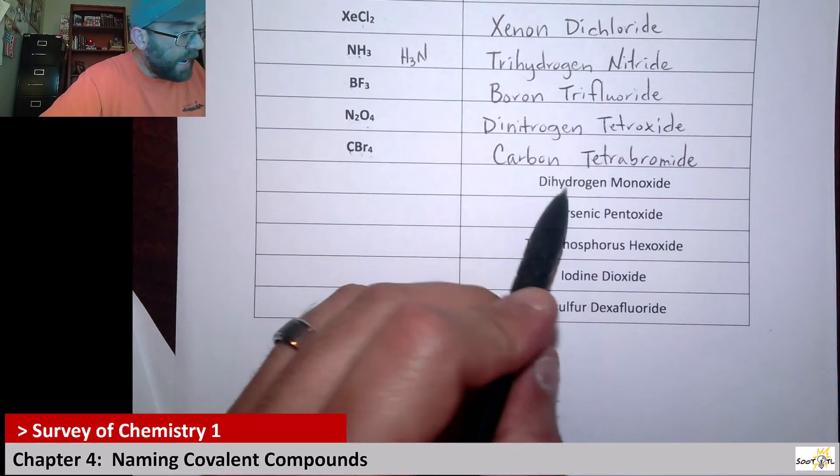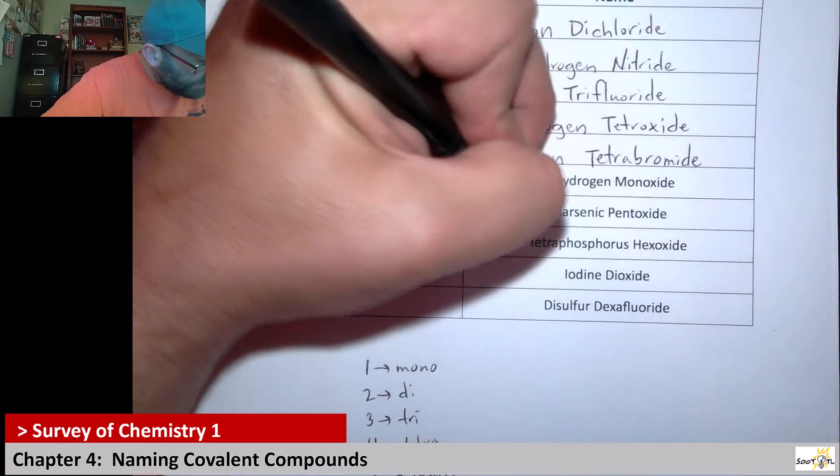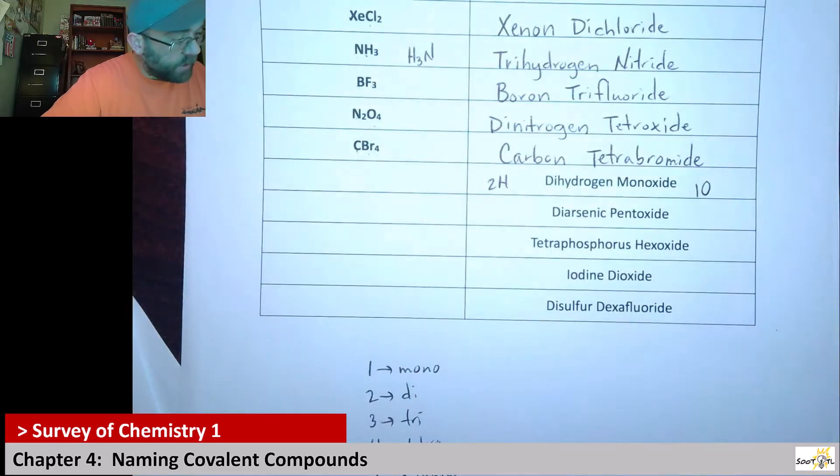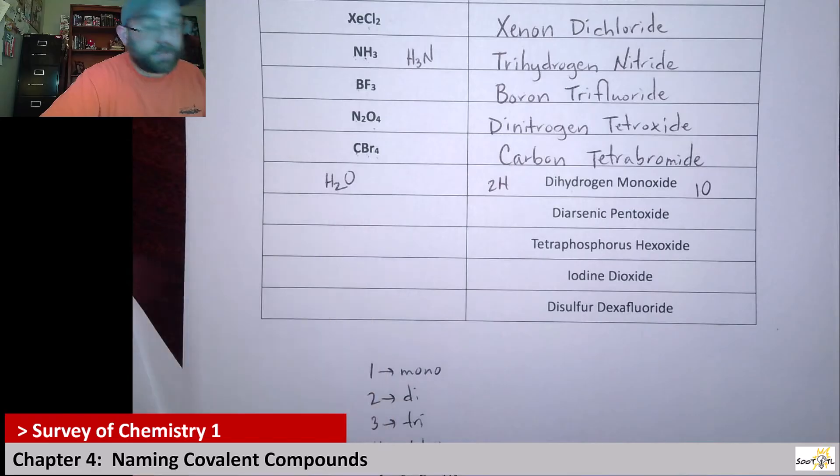Alright. Here we have dihydrogen monoxide. So there's two H's and there's one oxygen. So that would be H2O. Right? Dihydrogen monoxide, a.k.a. water.